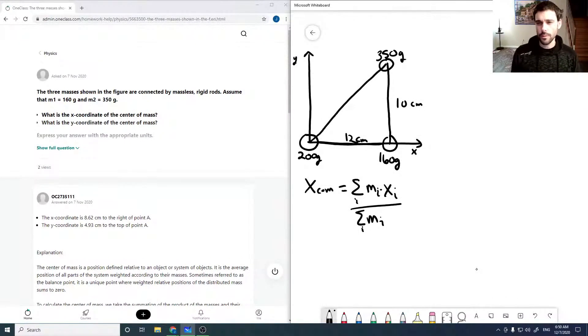This x coordinate is going to be 12 centimeters. So numbering these from one, two, three, our x1 is zero, our x2 is 12 centimeters, and our x3 is 12 centimeters.